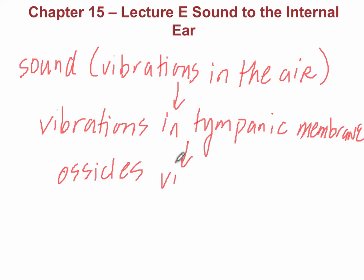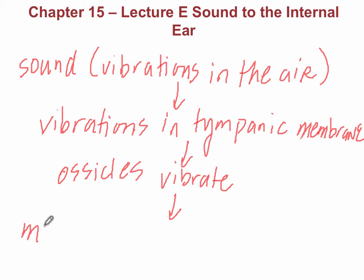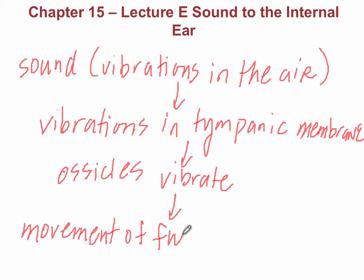And those ossicles then are going to vibrate in order. So there's the malleus, incus, and the stapes. And the stapes is what's going to be covering up the oval window. Once that oval window vibrates, then there's going to be movement of the fluid which is found in the inner ear. And that's what we're going to take a little bit more of a close look at in this short mini-lecture.